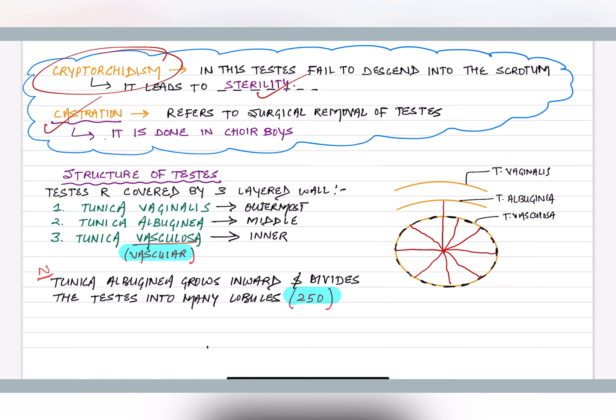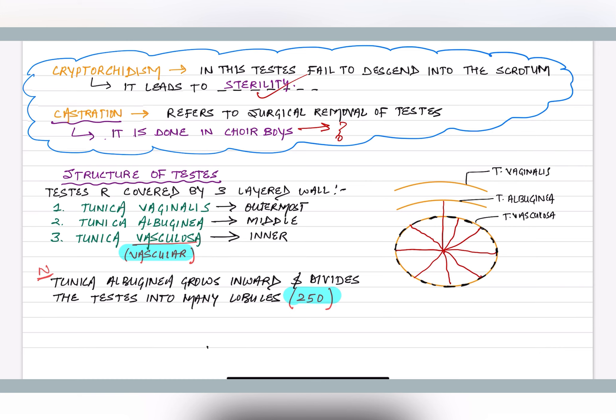Cryptorchidism is present by birth. Castration is done intentionally in some religions; an example is choir boys — boys who pray in church. The reason will be discussed in the next lecture; write your answers in the comment section.